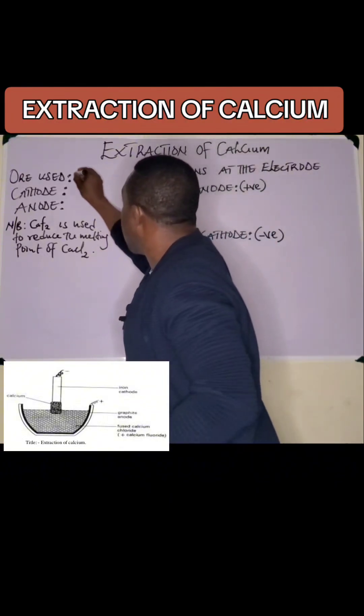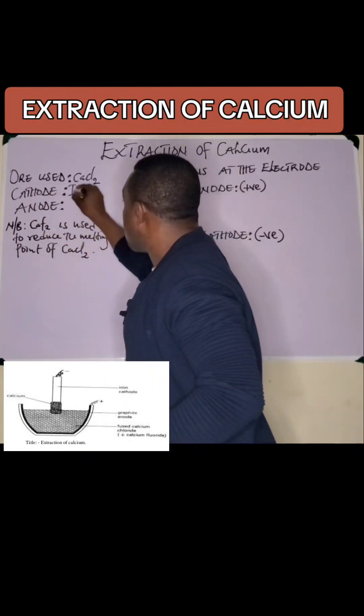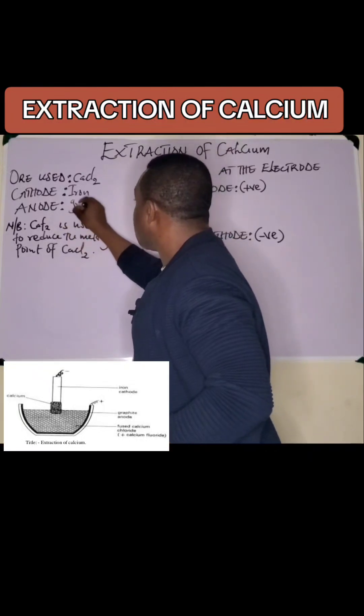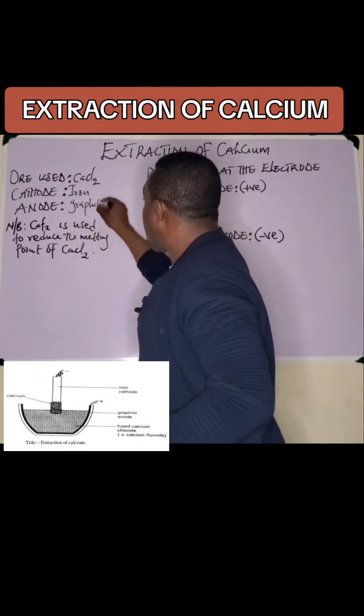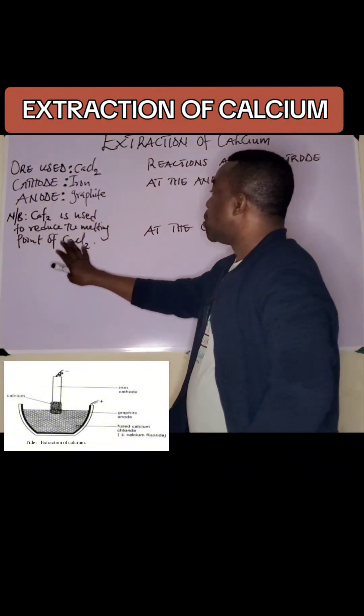Iron is the cathode and the anode is graphite. In this extraction, calcium fluoride is used to reduce the melting point of calcium chloride from 850 degrees Celsius to 650 degrees Celsius.